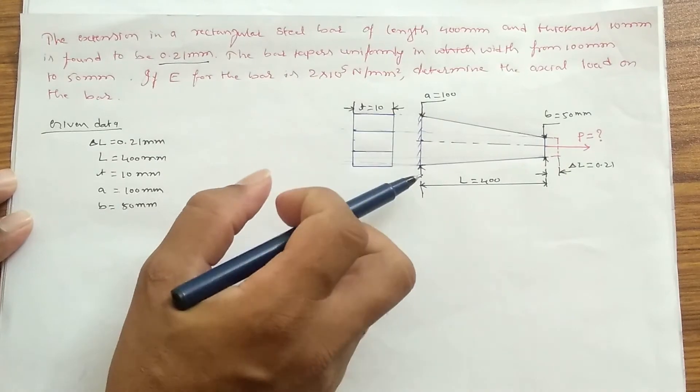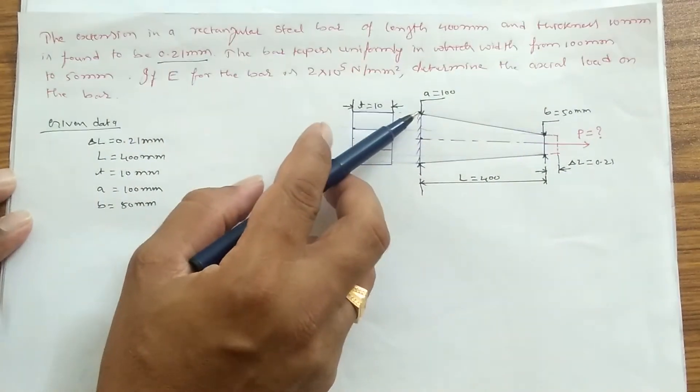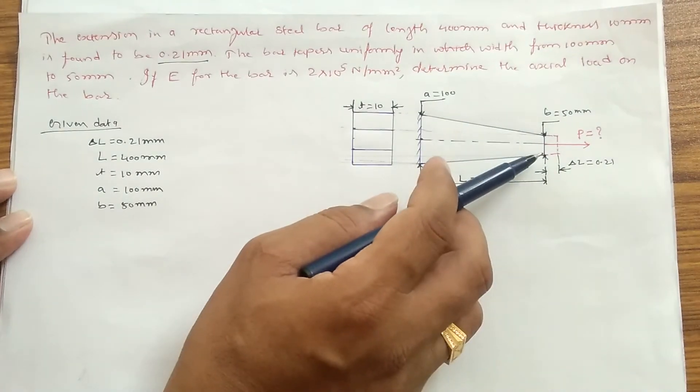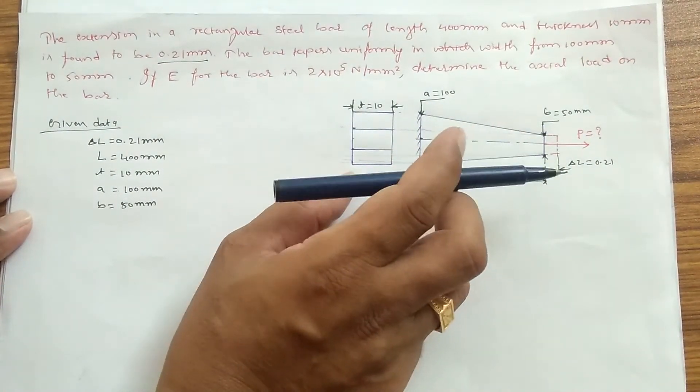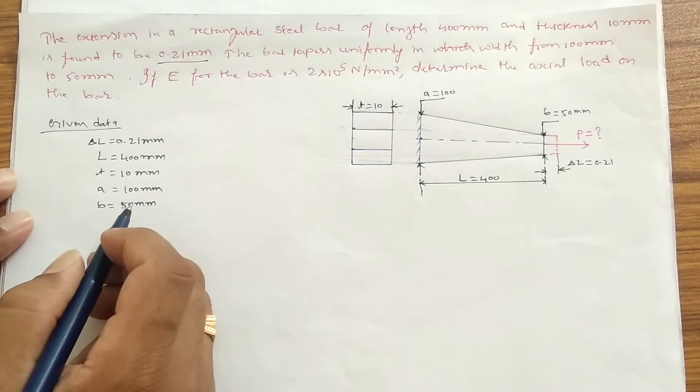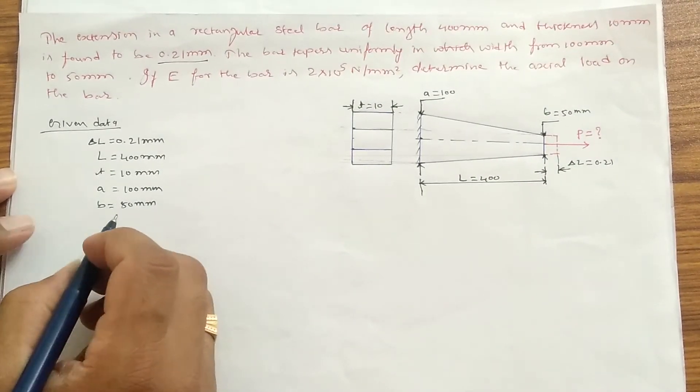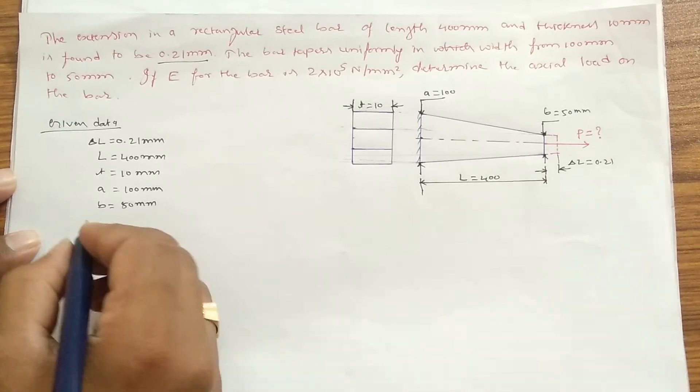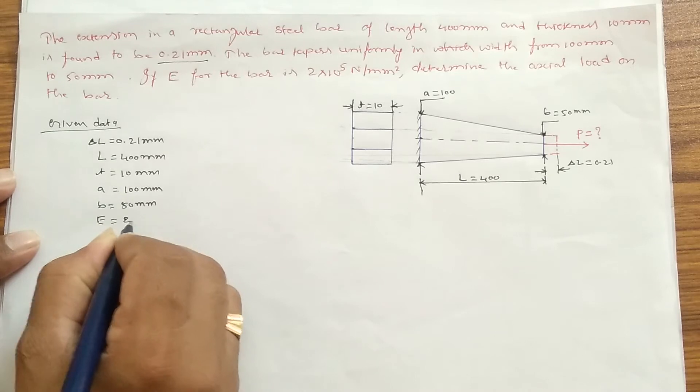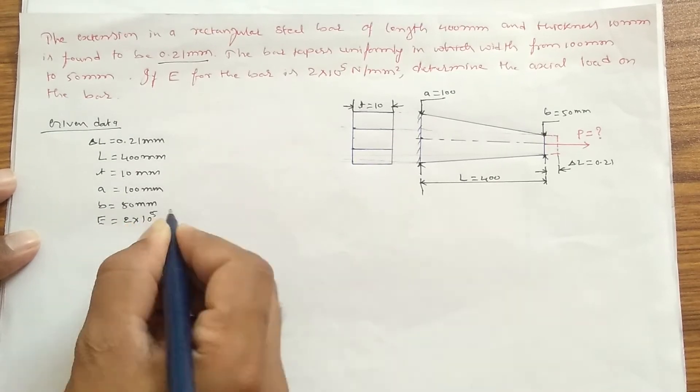You can see here, so this is the starting point, that is 100 mm, and the end point is B, so that is 50 mm. That is the taper of the bar. And Young's modulus, that is E, they gave 2 × 10^5...